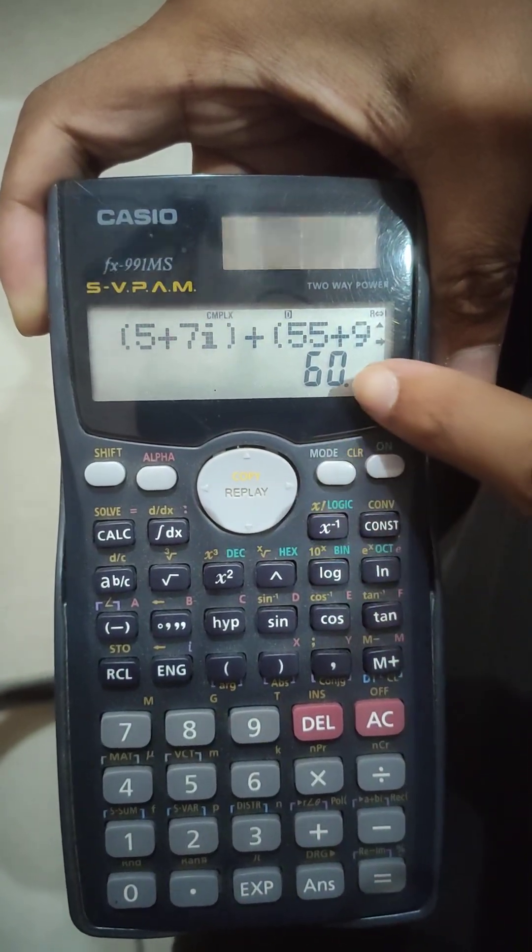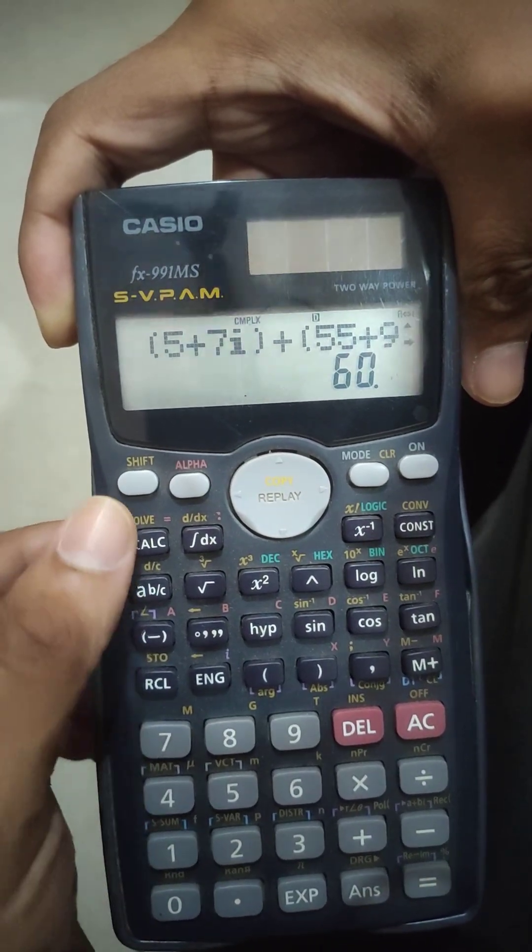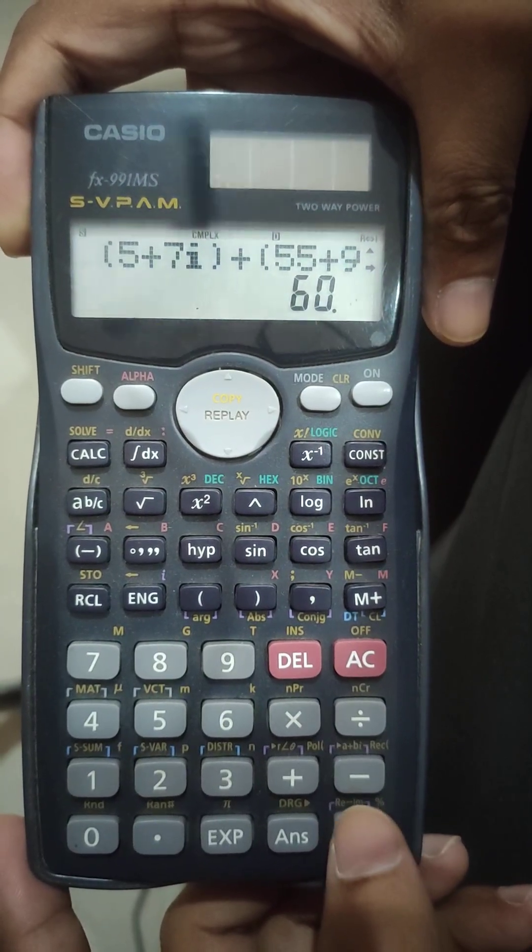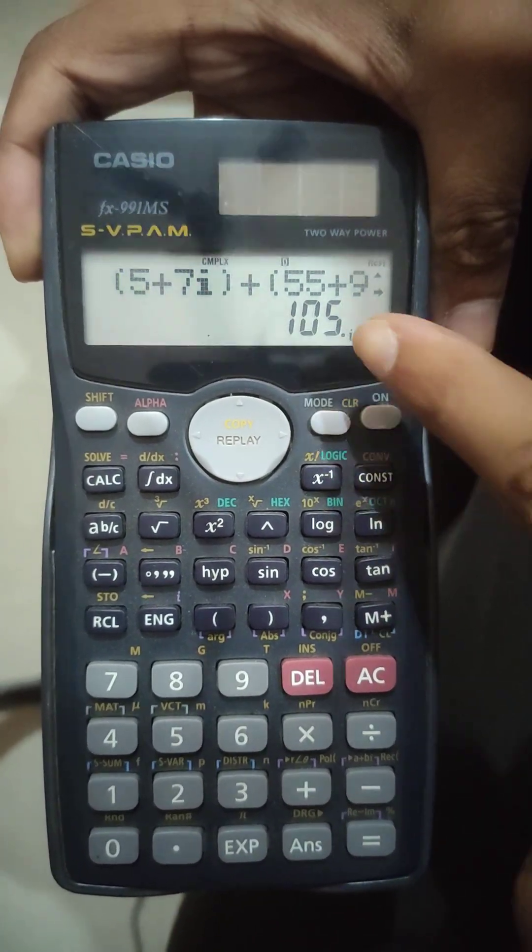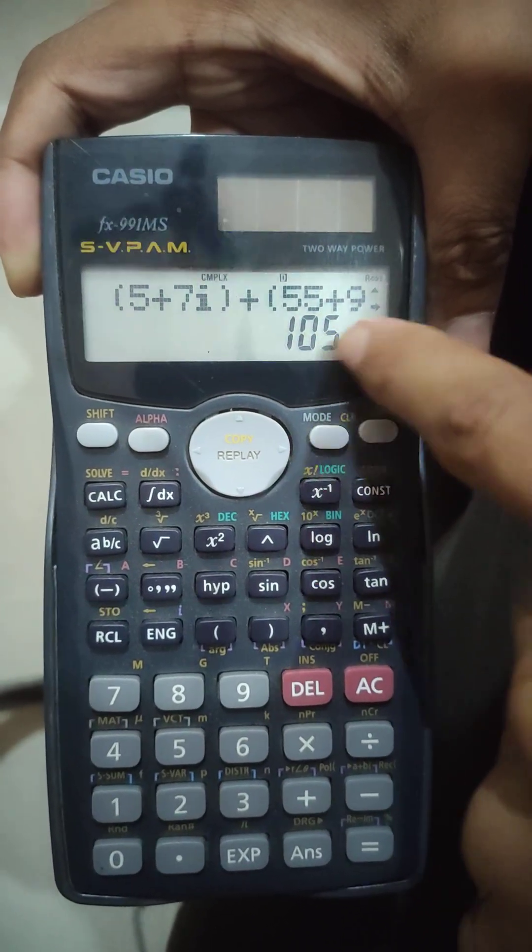Now, this is only half part, this is the real part. To see the imaginary part, you press the shift, and then press this, real to imaginary, the equal part. Now, as you can see, the i here, this means this is the imaginary part.